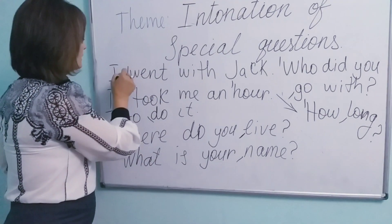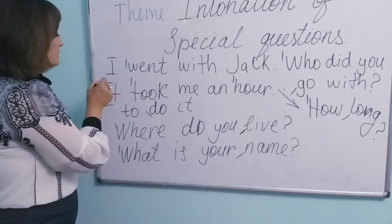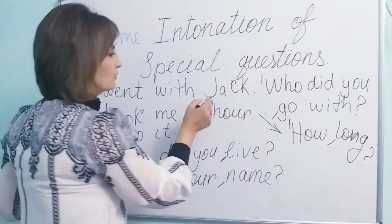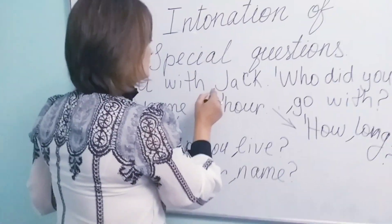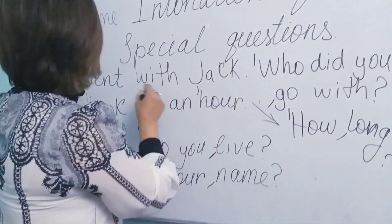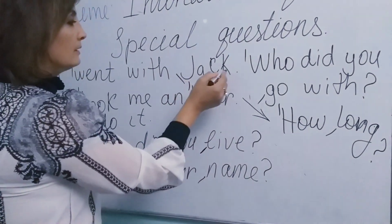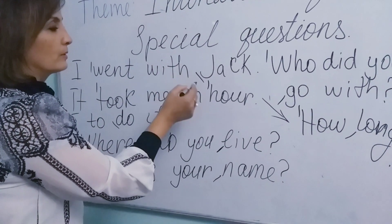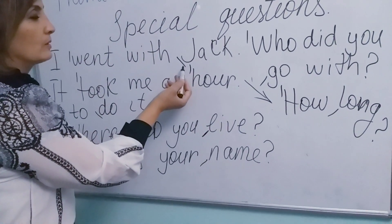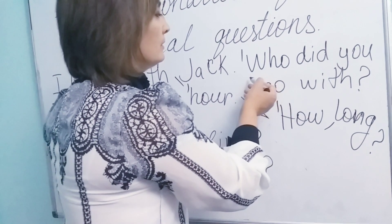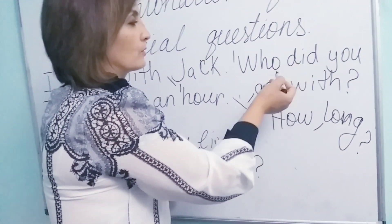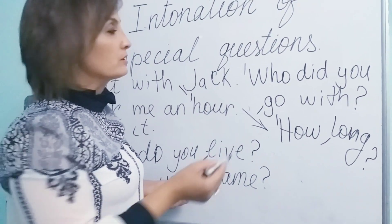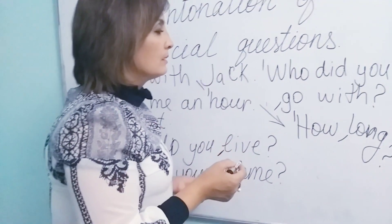Let's put the stress marks for this special question. The pronoun 'it' is not stressed because it's a structure word. 'Jack' is a noun, so it takes stress. 'I went with Jack' is a statement — a declarative sentence — and it is pronounced with a low-falling nuclear tone. The stress mark for low rise is shown here. And the response 'Who did you go with?' uses the low-rising nuclear tone in this repeated echoing special question.